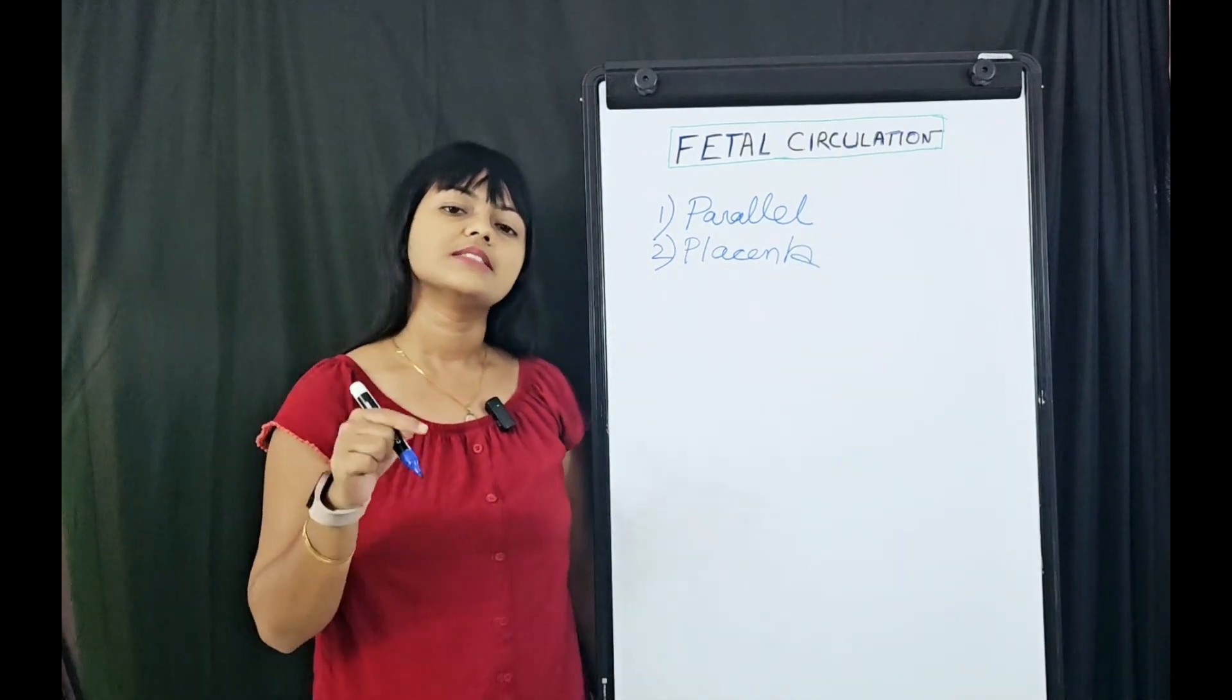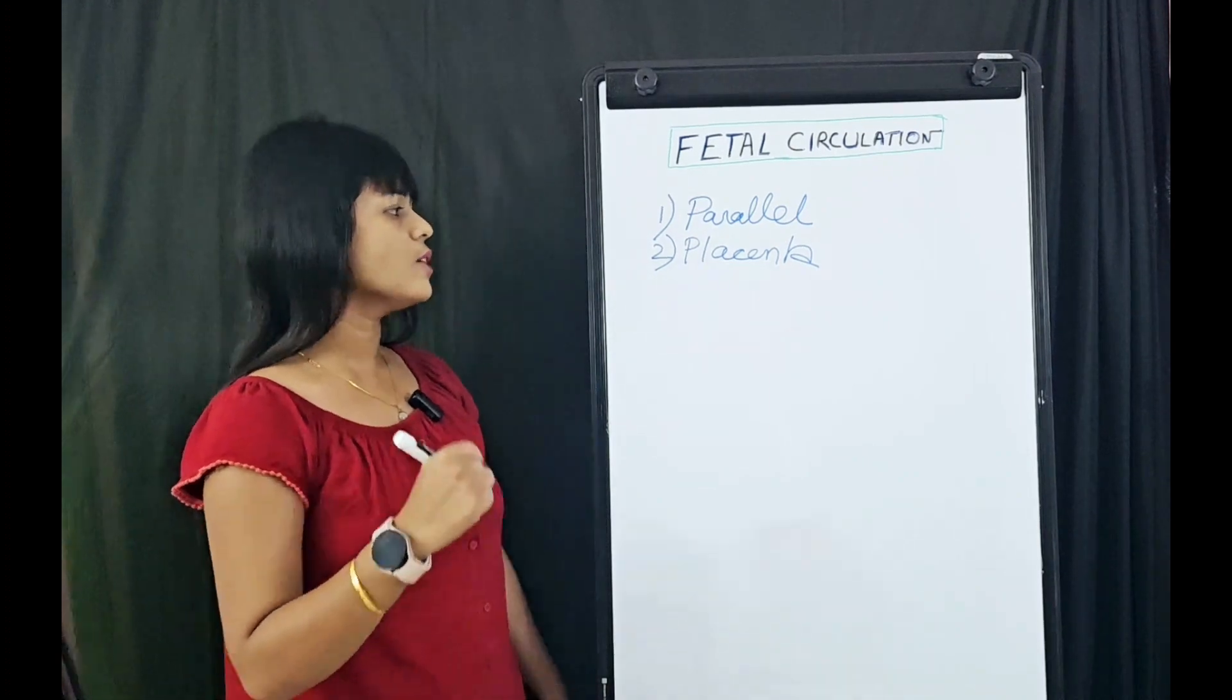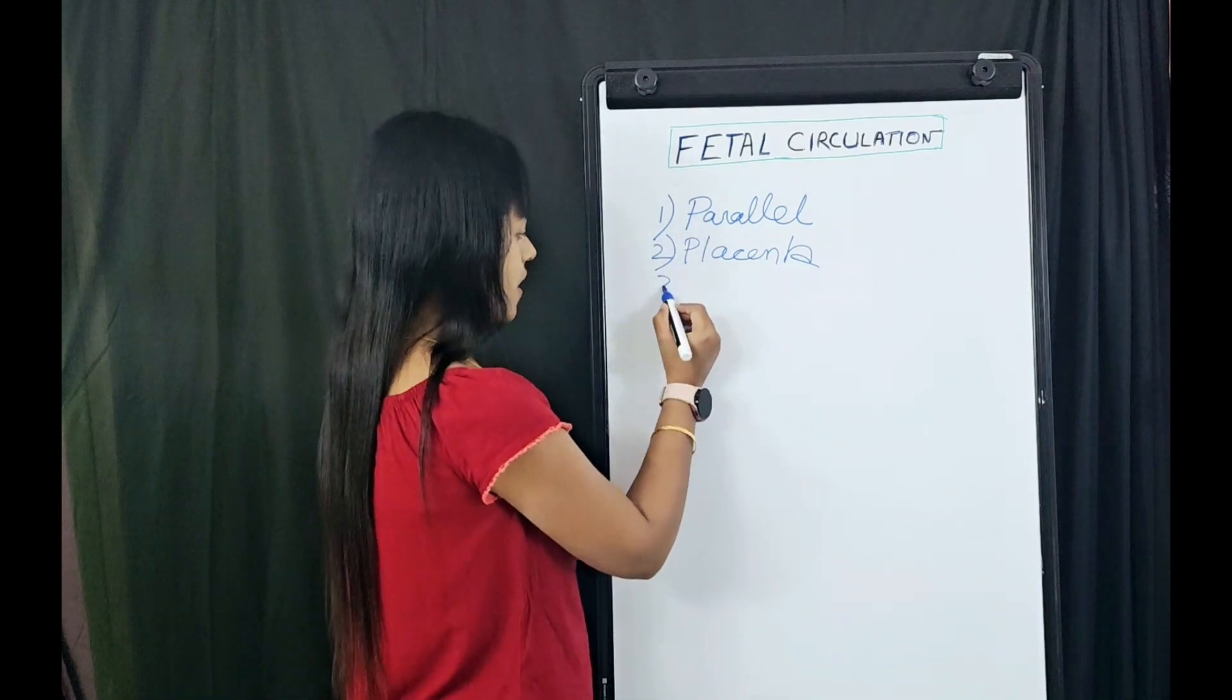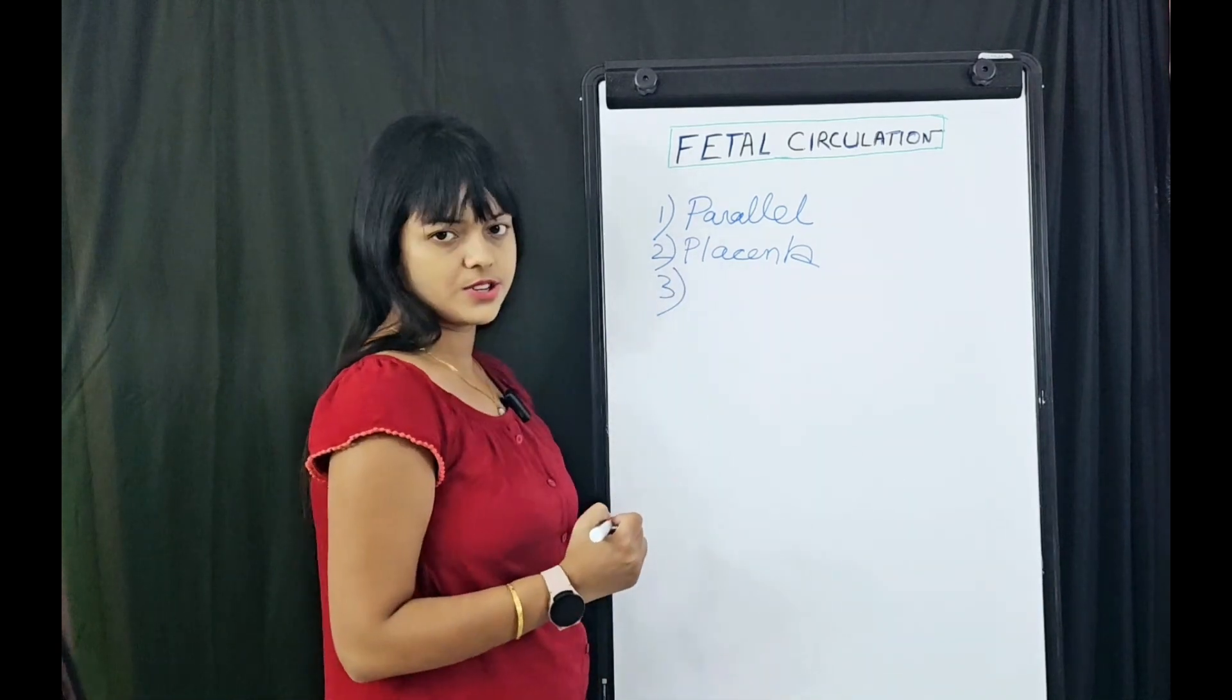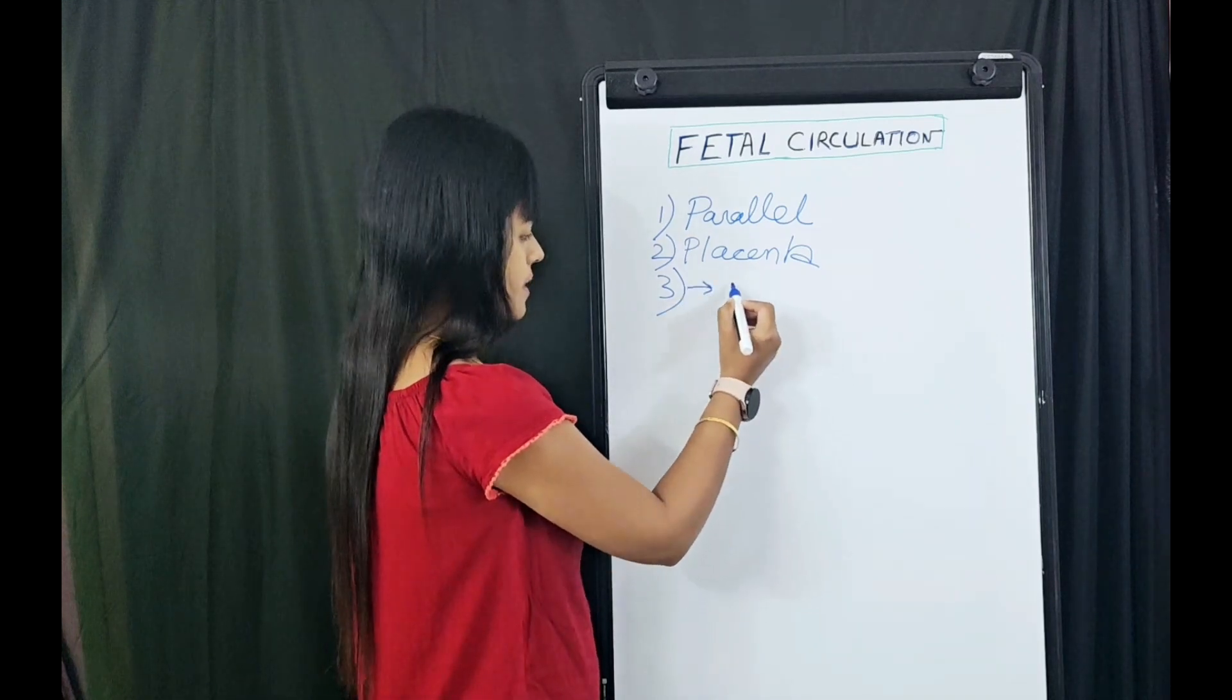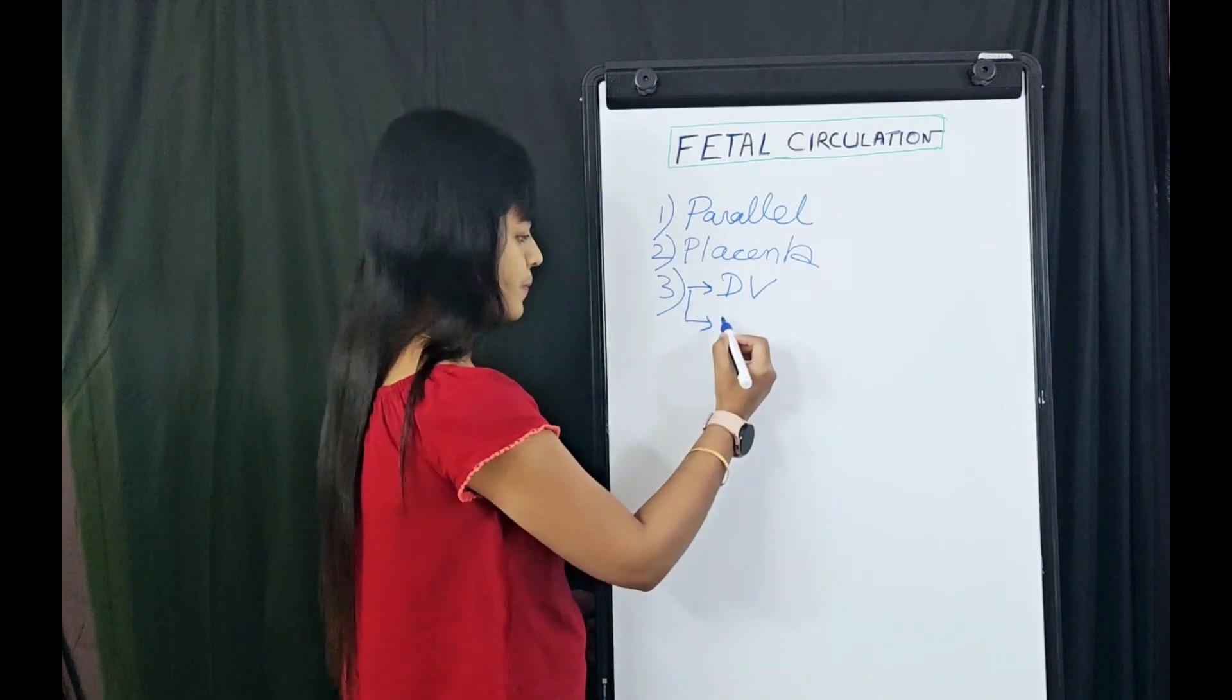The next unique feature is the main unit of gaseous exchange in fetal circulation is placenta, contrary to neonatal or adult circulation where it's lungs. What are the three unique structures in fetal circulation? DV stands for ductus venosus, foramen ovale, and the third one is ductus arteriosus.